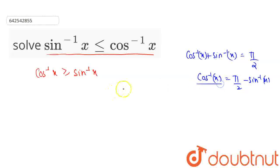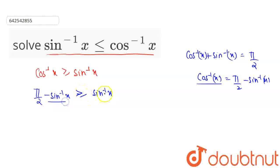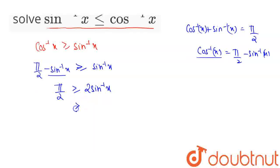Let us write the value for this to this side. So this will be π/2 minus sin inverse of x, which is greater than or equal to sin inverse of x. Taking this term to the right side, this will be π/2 is greater than or equal to 2 sin inverse of x. So that means sin inverse of x is less than or equal to π/4.